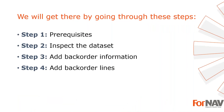To demonstrate getting backorder information on your Business Central invoices, I'm going to use these steps. First, prerequisites — what do I need to get going. In step 2, I will inspect the data set. In step 3, I will add backorder information to my invoice header. In step 4, I will add the backorder lines. Let's start with the first step.